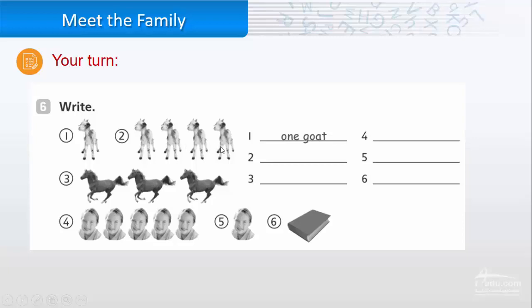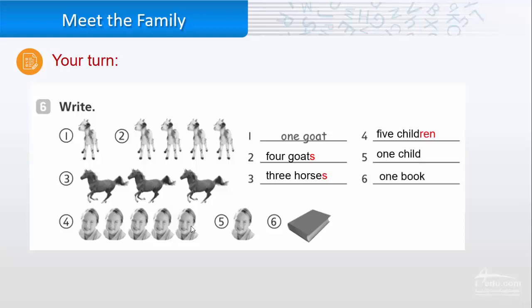Here we have one, two, three, four — four goats, we add S. Three: we have one, two, three — three horses, the plural with S. Four: one, two, three, four, five — five children. Picture number five is one child. And six, we have one book.